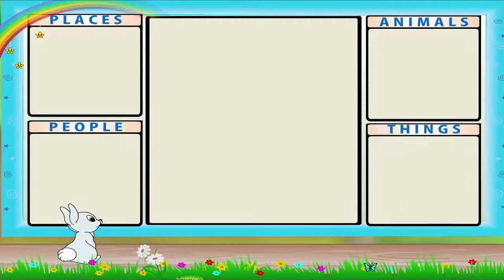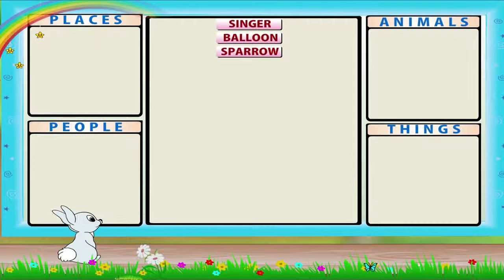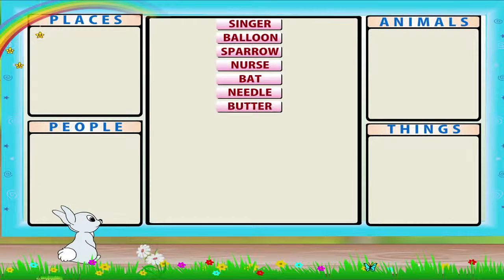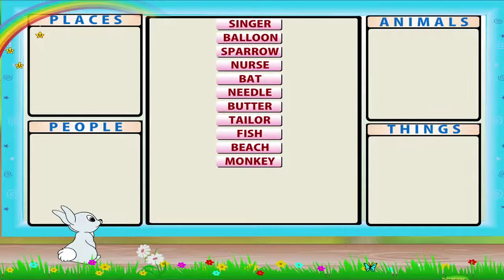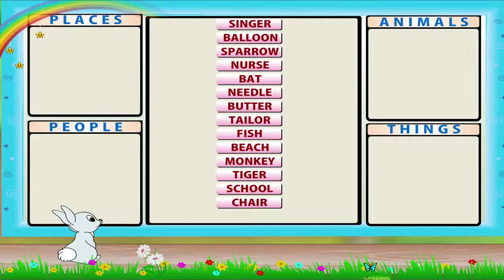I am sure you enjoyed the activity. Now for some fun, Rainbow. I am giving you some nouns — put them in correct groups: singer, balloon, sparrow, nurse, bat, needle, butter, tailor, fish, beach, monkey, tiger, sugar, school, chair, parrot.